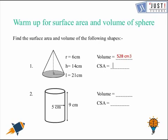Curved surface area of a cone is πrl where l is the slant height. The answer will be 396 cm² because it is area. In the next one, it is a cylinder.